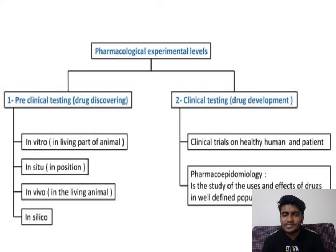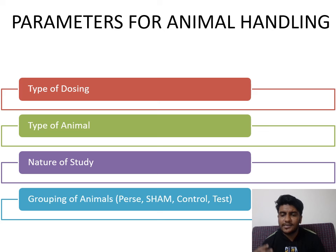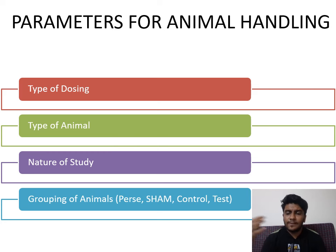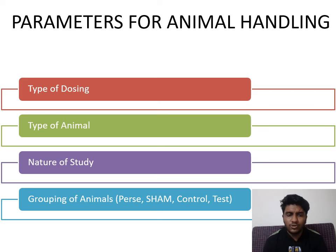In clinical testing, experiments are majorly performed on humans, or epidemiological data is generated. This presentation focuses on preclinical testing, which is useful for drug discovery. The different parameters for animal handling must be well known — when we handle an animal, there are various parameters to consider.